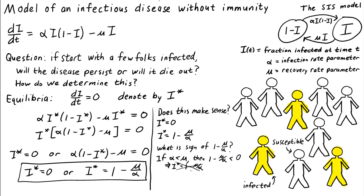The only biologically plausible equilibrium is i* equals zero. On the other hand, if alpha is greater than mu, then mu over alpha is less than one, so 1 minus mu over alpha is greater than zero. That means the equilibrium i* equals 1 minus mu over alpha is a reasonably biologically plausible equilibrium. We conclude that if alpha is greater than mu — that is, the infection rate parameter is greater than the recovery rate parameter — then we have two reasonable equilibria. We immediately see we're going to get very different behavior depending on the relationship between alpha and mu.